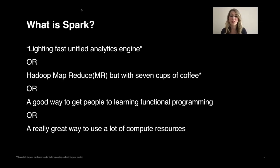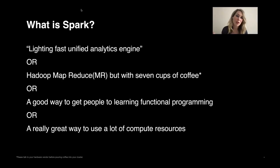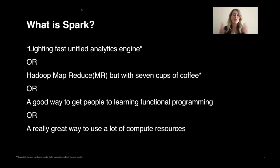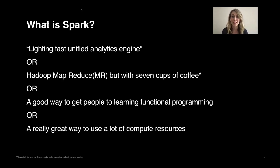Some other taglines you may have heard about Spark: it's Hadoop MapReduce but with seven cups of coffee — with a little disclaimer to check with your hardware vendor first. There have been so many numbers thrown around over the years, but essentially Spark jobs, because of their ability to utilize memory and do large processing, run anywhere between 10 to 100 times faster than Hadoop. Spark is also a good way for folks to learn functional programming, since Scala is a functional language — though personally I know this much about Scala and prefer to use Python. It's a great way to use a lot of compute resources, doing extremely large jobs across super large clusters using a ton of memory and CPU.